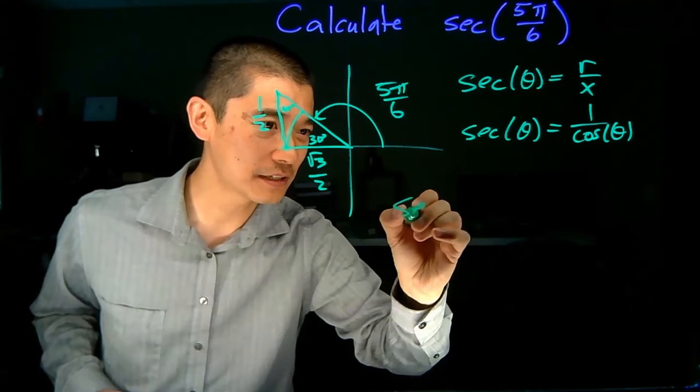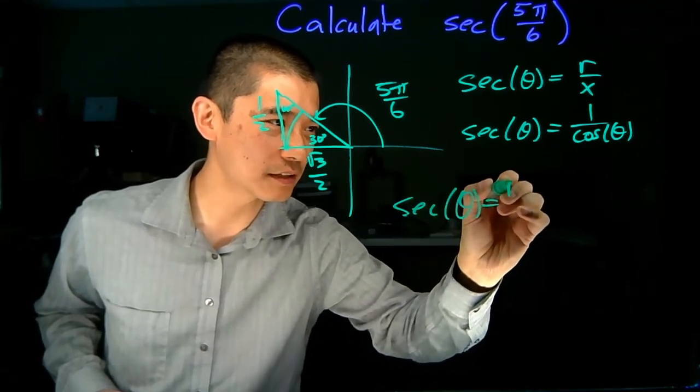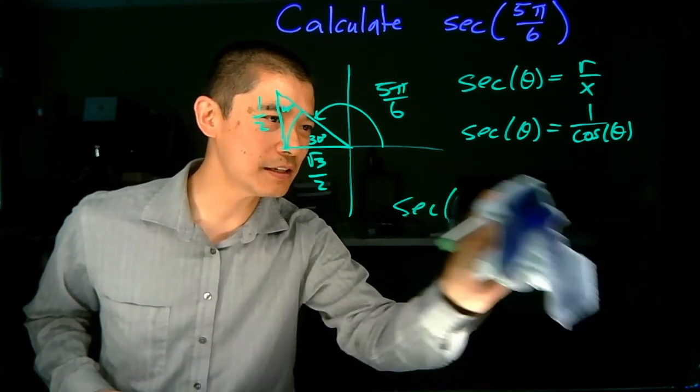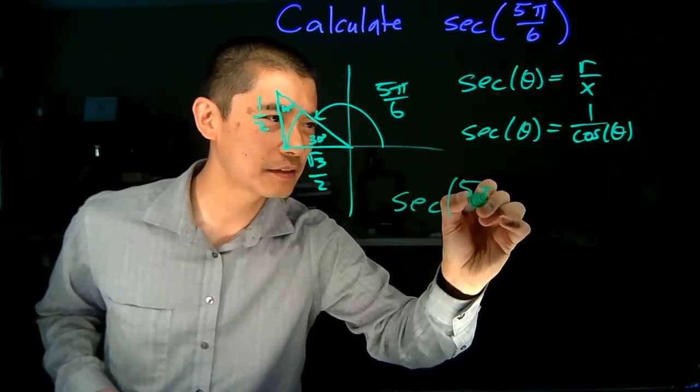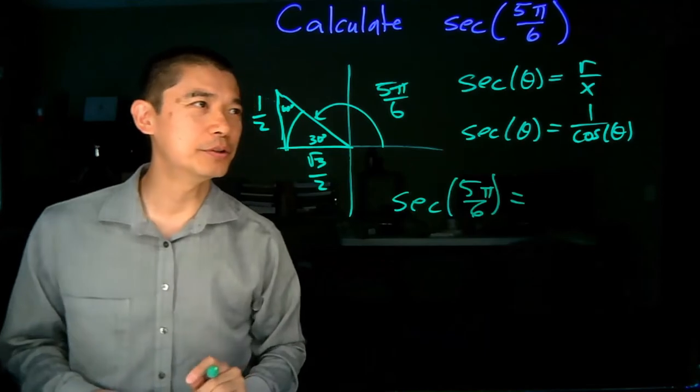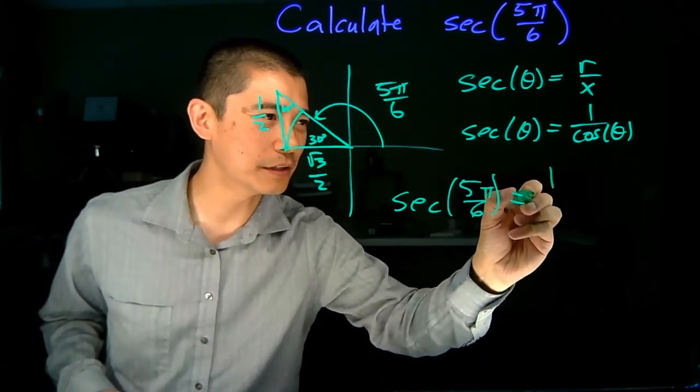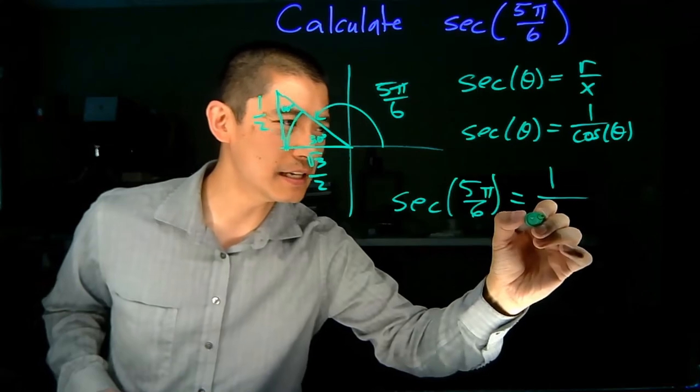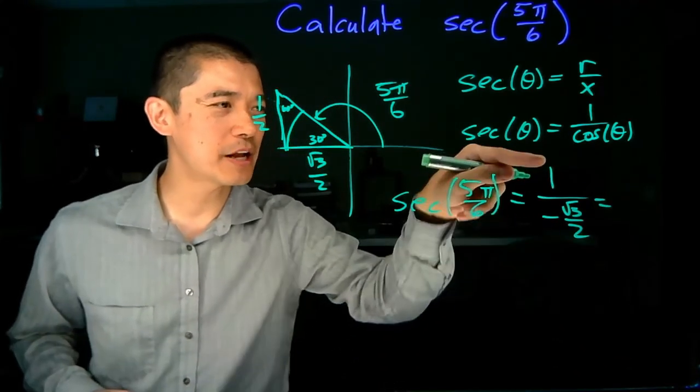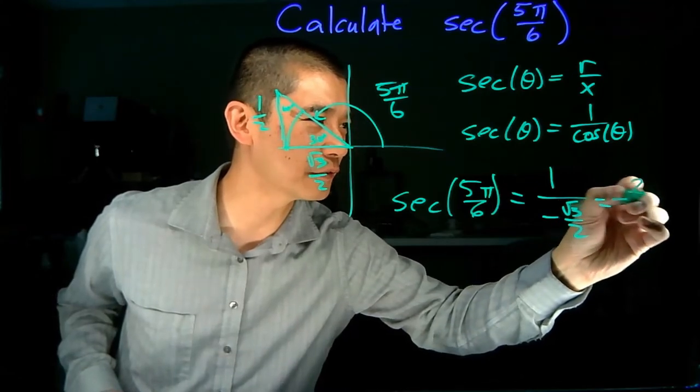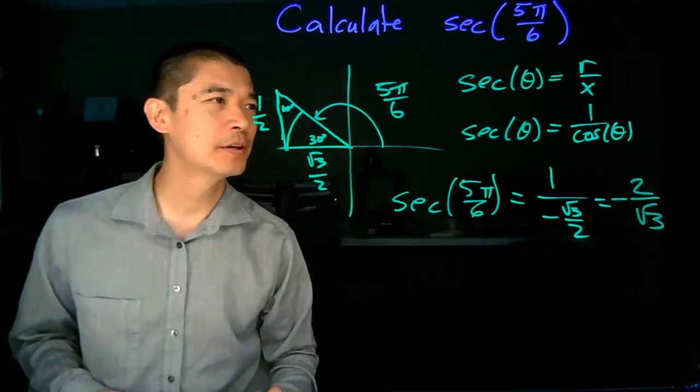And so, using the top version, secant of 5 pi over 6, x is equal to r over x, where our radius r is 1, x is going to be negative root 3 over 2, fraction inside a fraction multiplied by the reciprocal of the denominator, negative 2 over square root of 3.